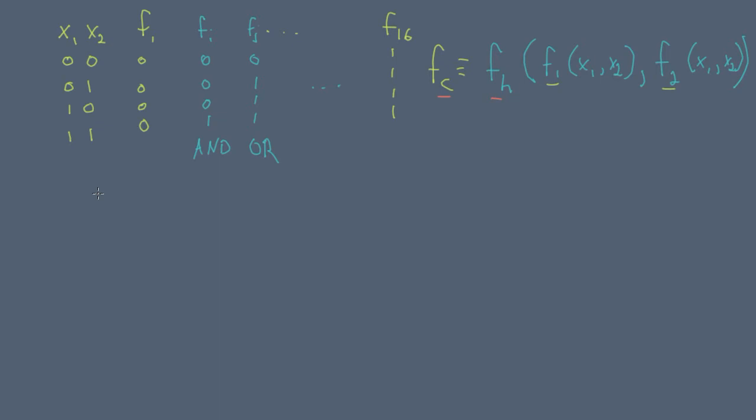Note that in general fc is not equivalent to fh. Now, since fh, f1, and f2 can all be one of 16 possible two-variable Boolean functions, we have 16 cubed equals 4096 possible once-composed two-variable Boolean functions.